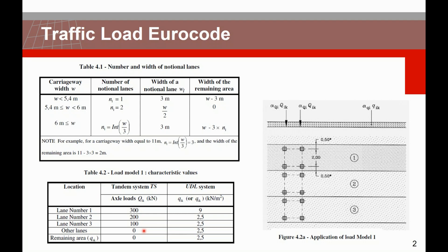Here you see the visualization of a tandem system. One tandem system can be shown as four wheel prints, so two axle forces. The distance in the width direction is 2 meters, and in the driving direction — the longitudinal direction — it is 1.2 meters.